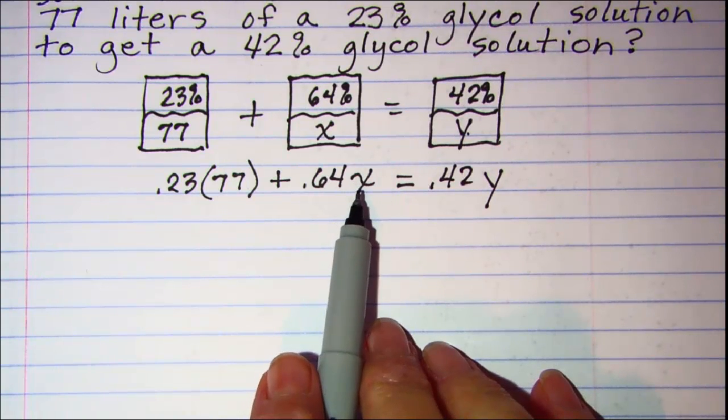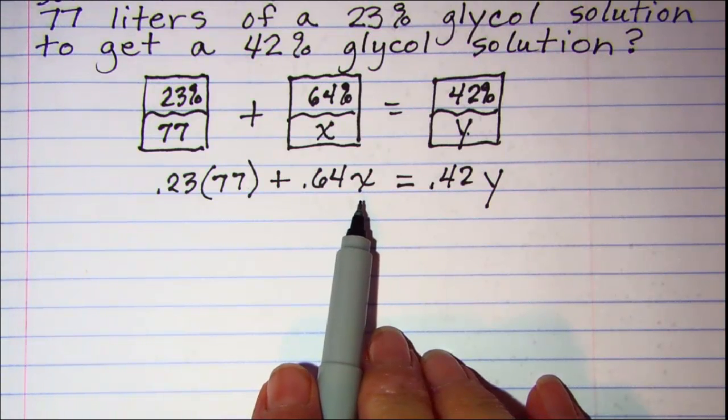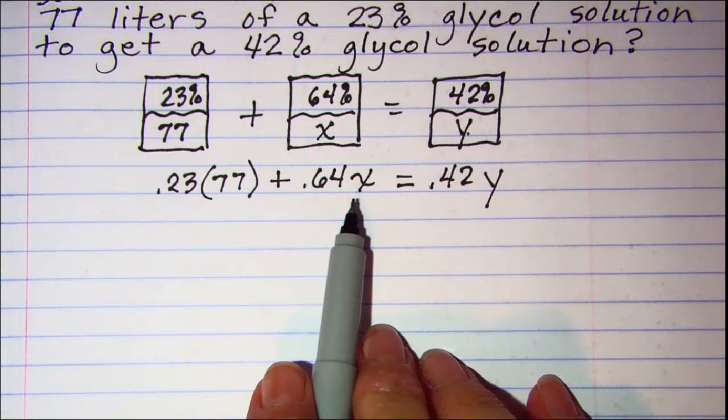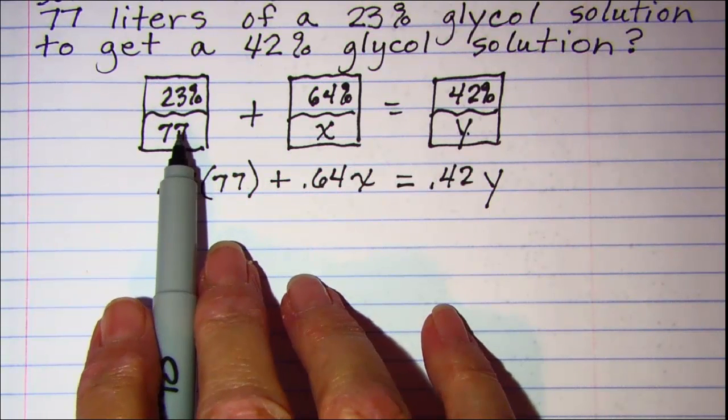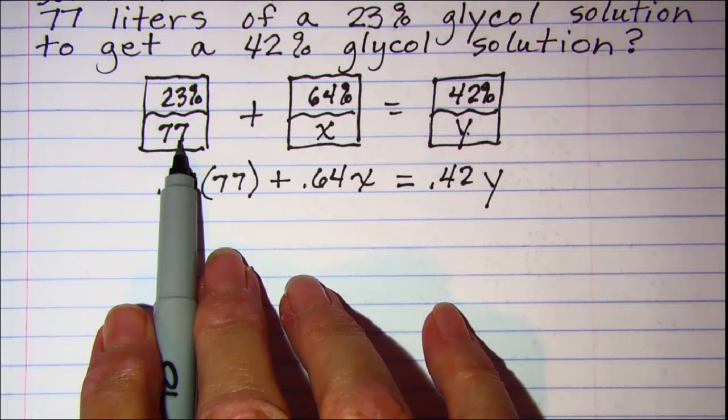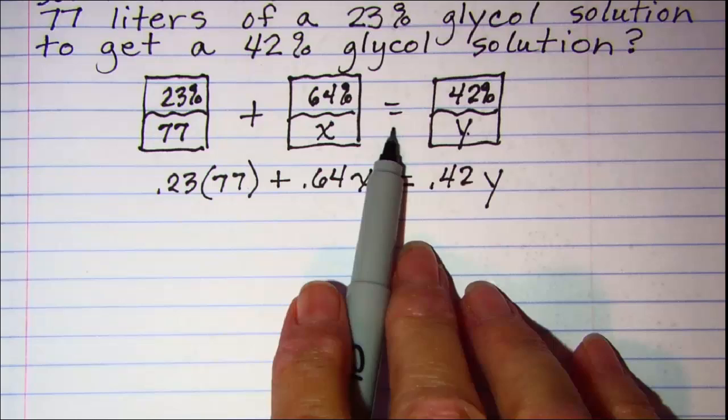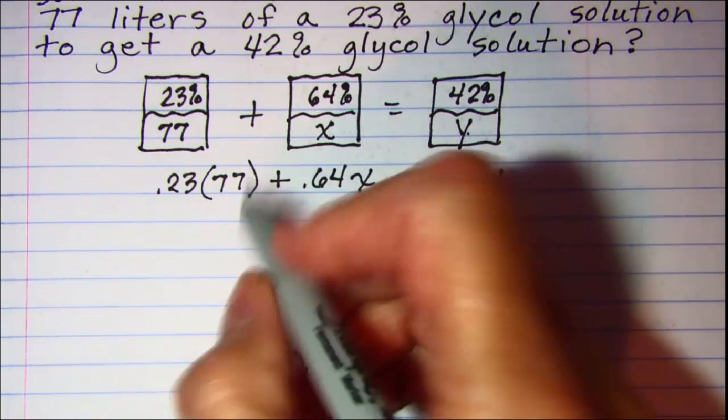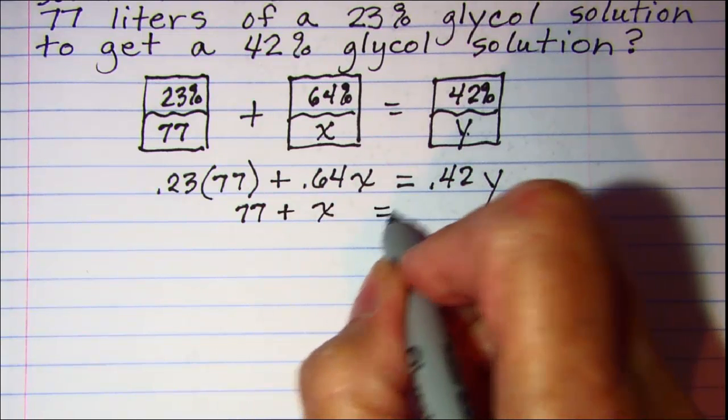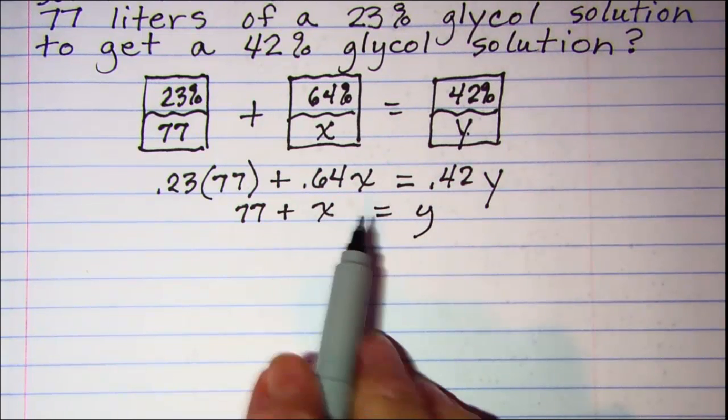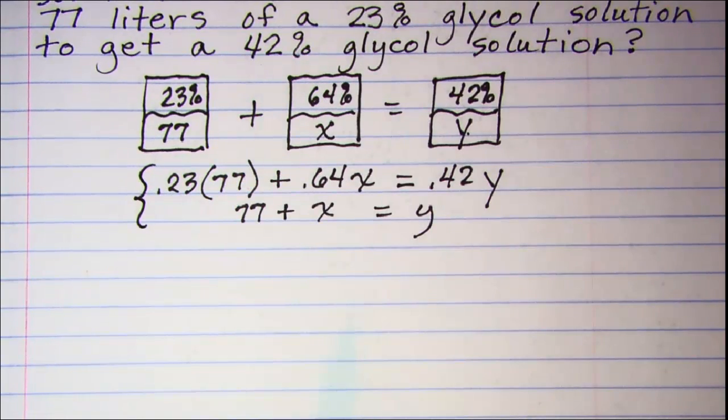Now since I've set this up with two variables I need two equations in order to solve the system. My other equation comes from the amounts here on the bottom of my graphic organizer. So 77 liters added to x liters will give me y. So 77 plus x equals y. Now I have my two equations two unknowns so this is the system I need to solve.